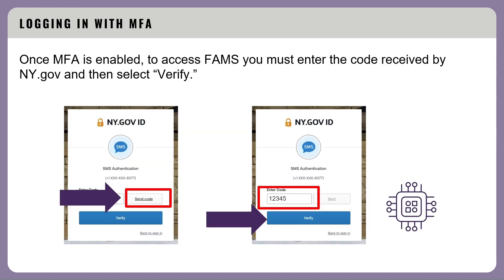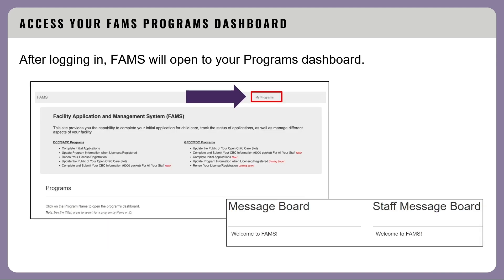Once MFA is enabled, to access FAMS you must enter the code received by ny.gov and then select Verify. After logging in, FAMS will open to your program's dashboard.